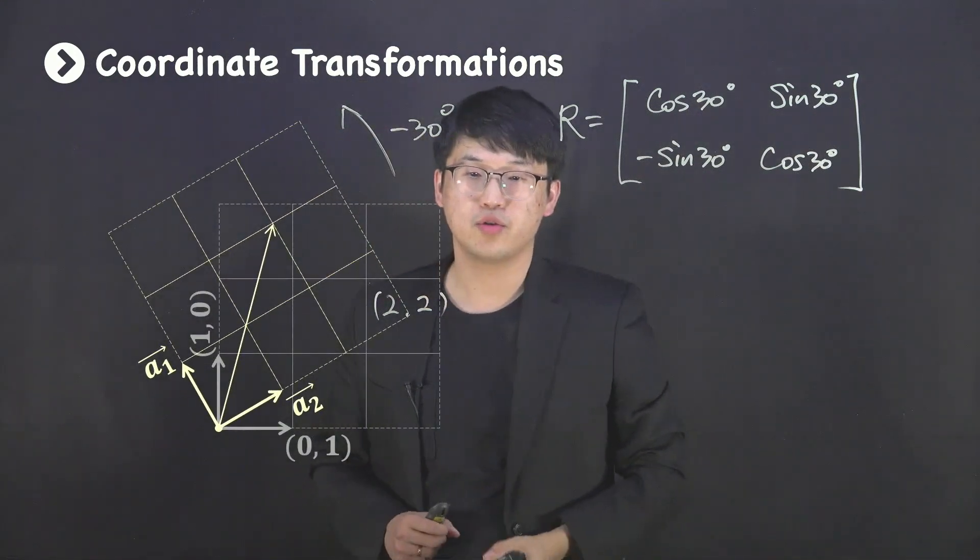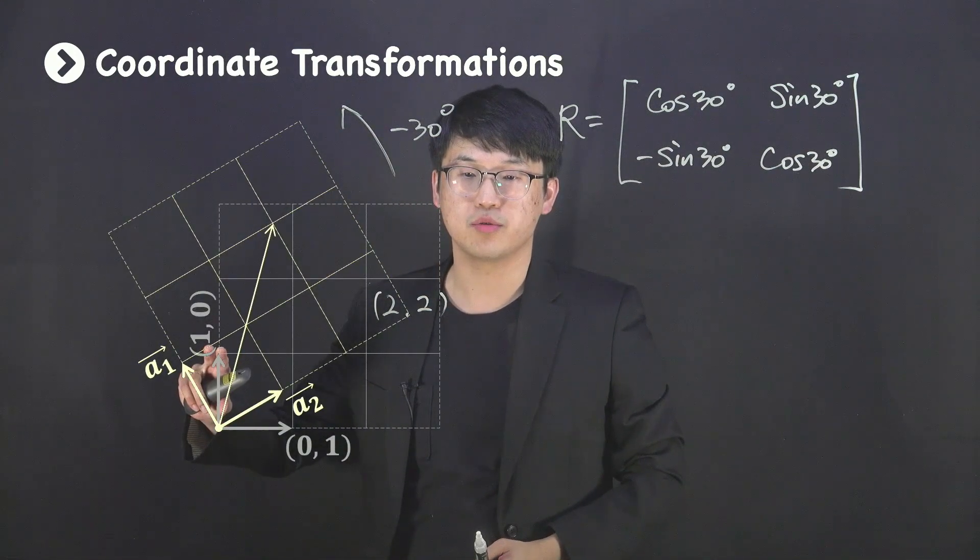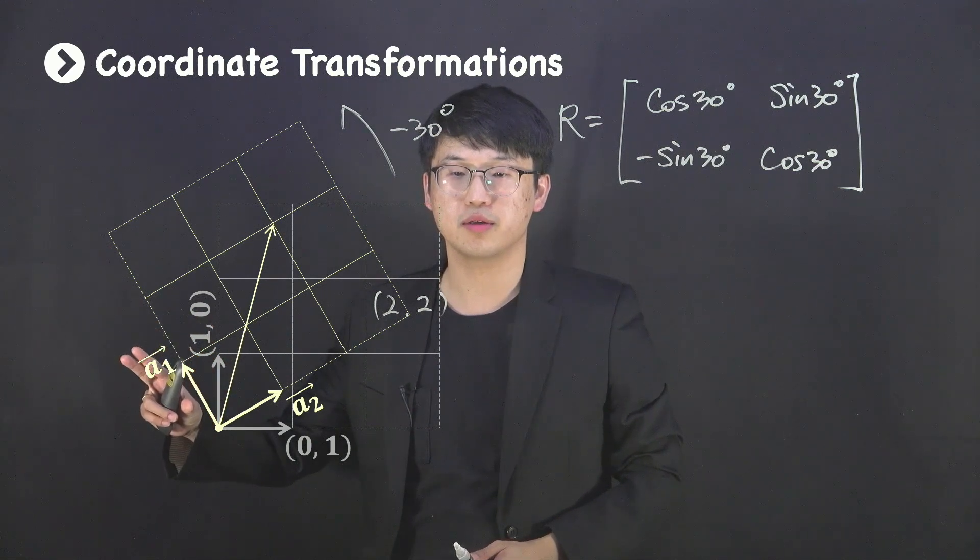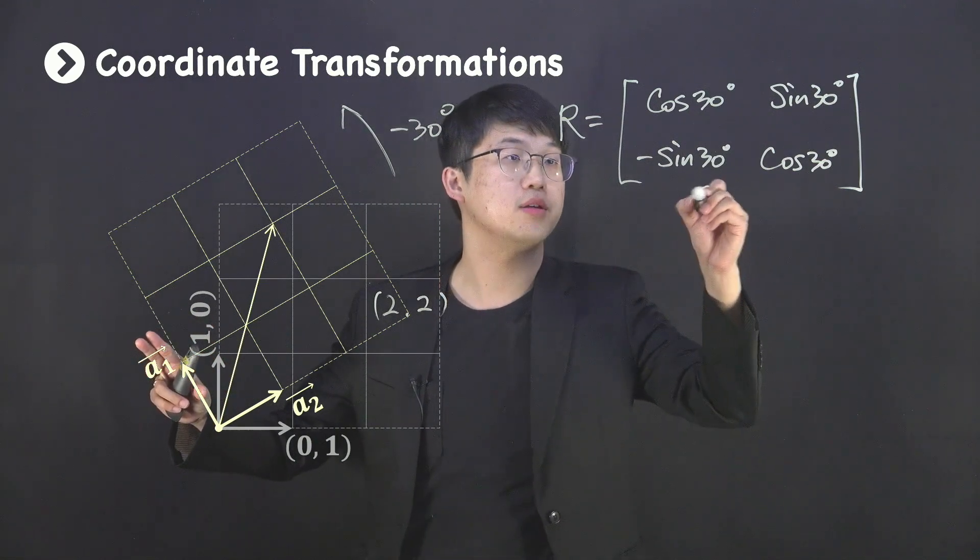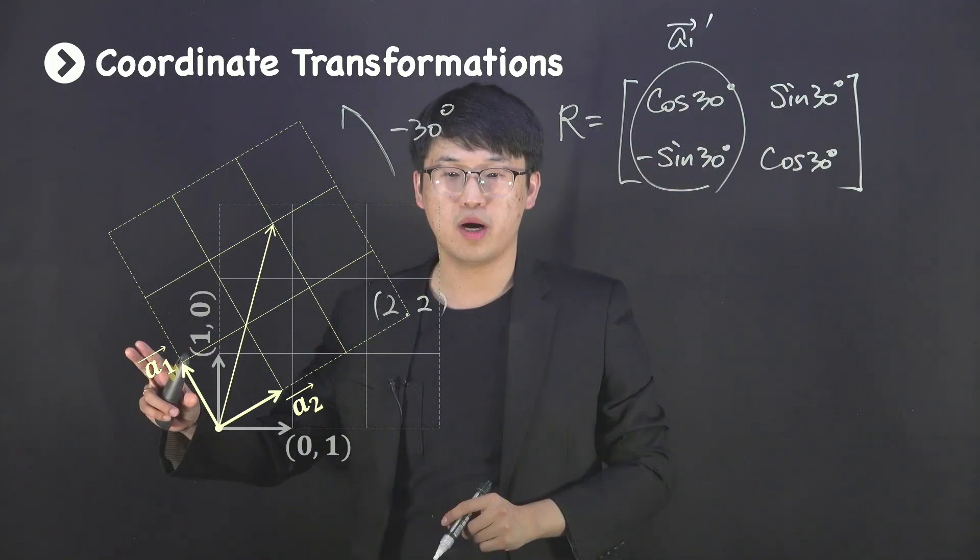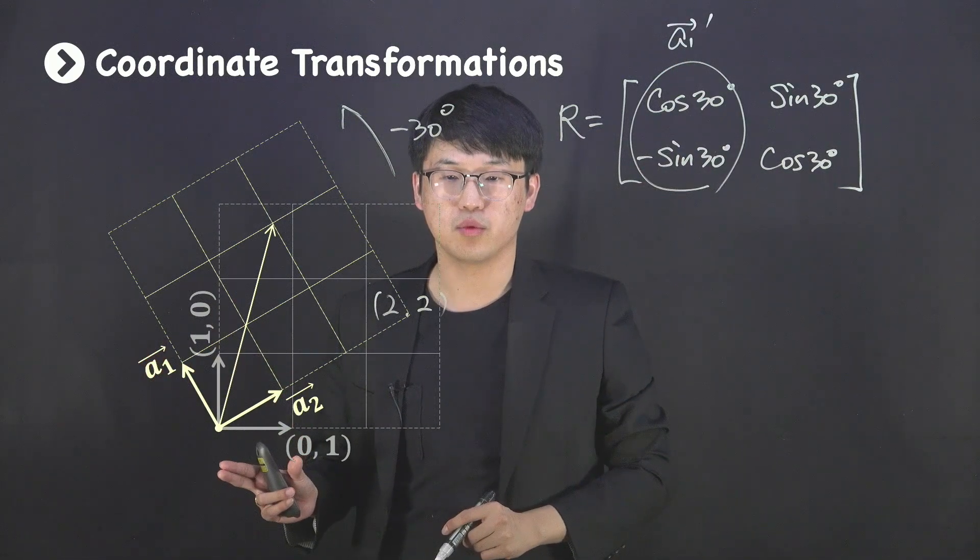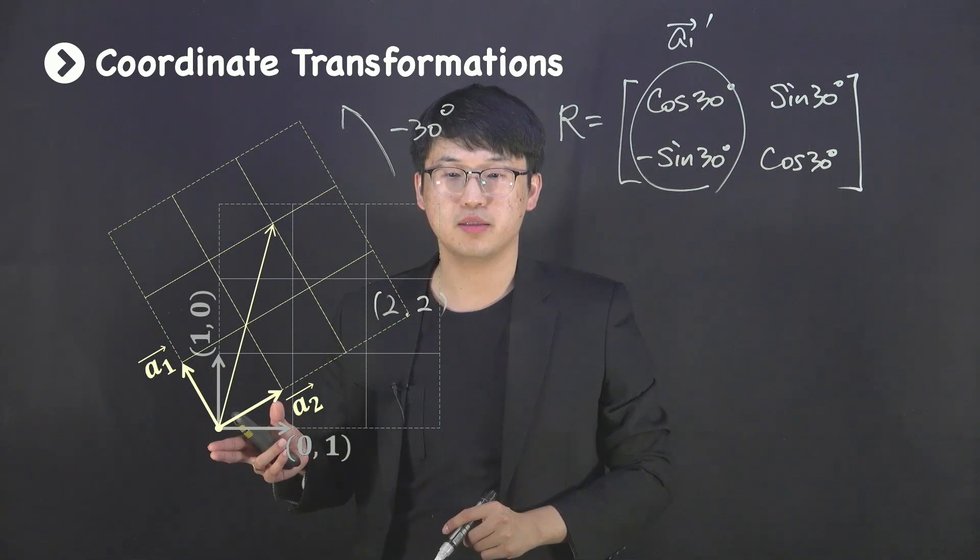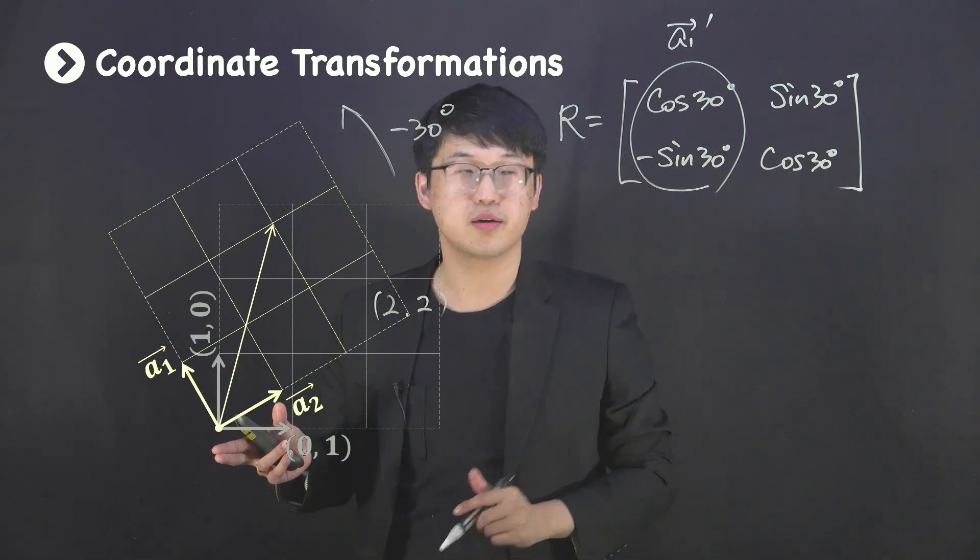Because your first unit vector is now moved to (cosine 30°, -sine 30°), while the second unit vector (0,1) is pointing to (sine 30°, cosine 30°).